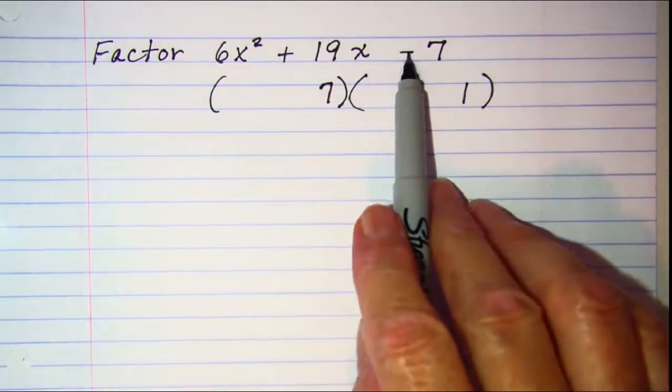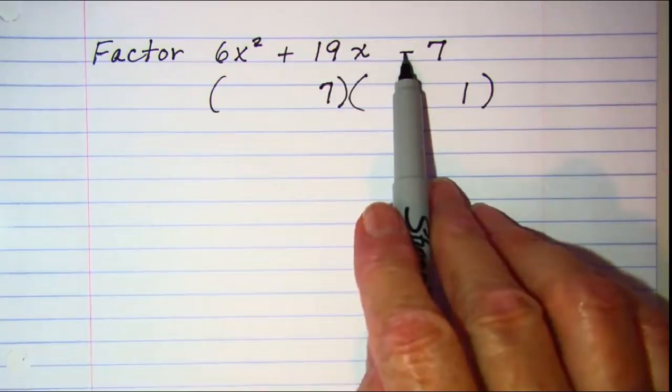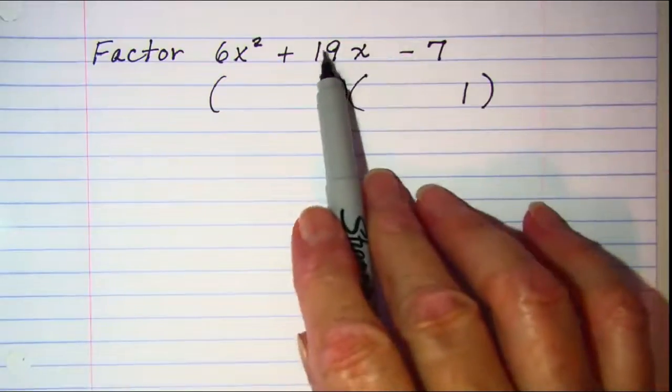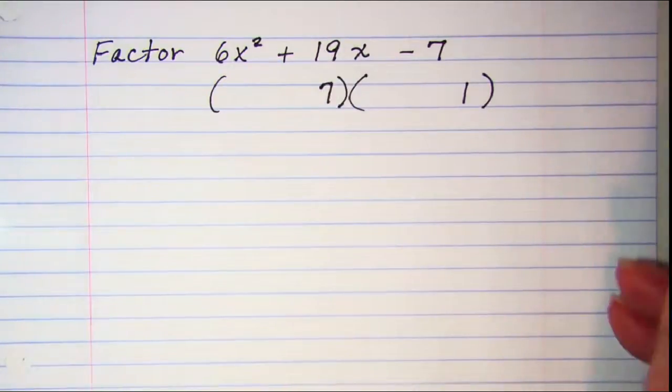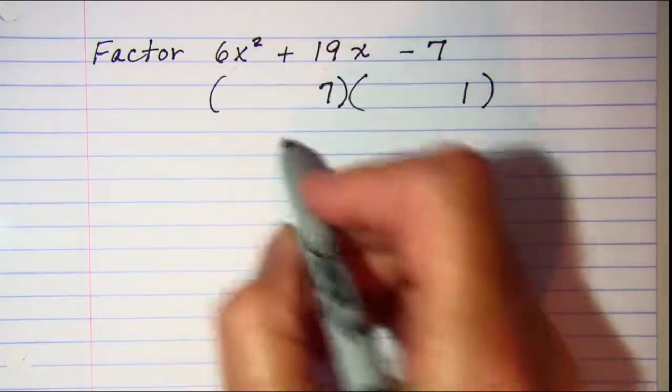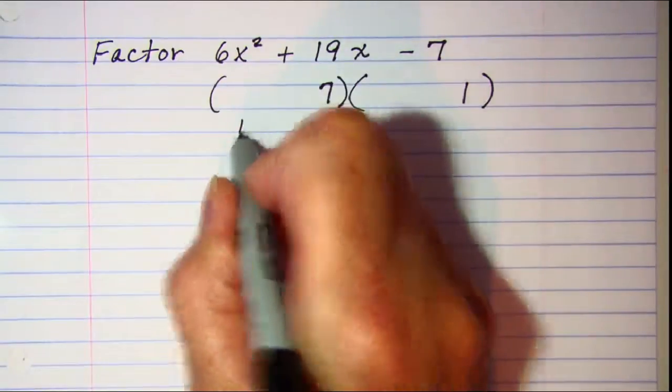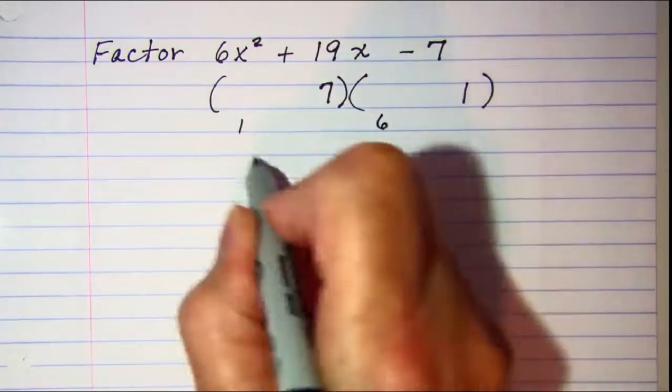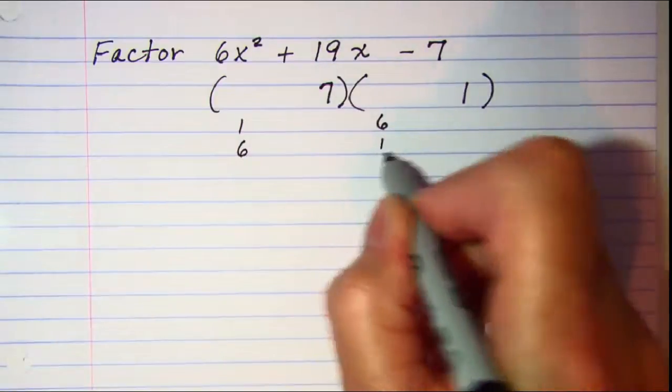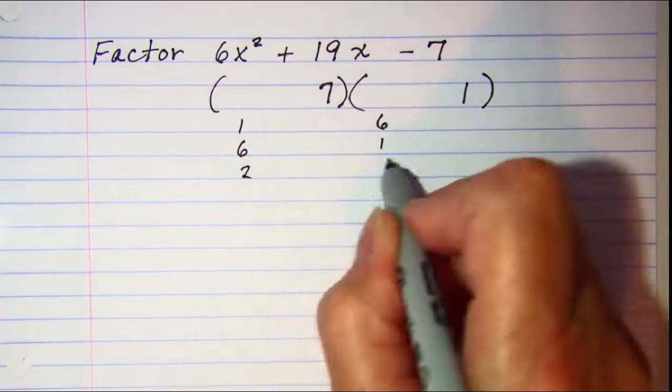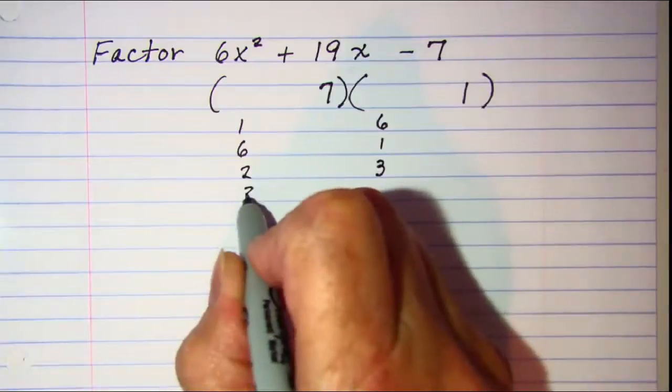So I'm going to go ahead and put in 7 and 1. Again I'm going to subtract the numbers to get 19. So for 6 I'm going to try 1 and 6, 6 and 1, 2 and 3, 3 and 2.